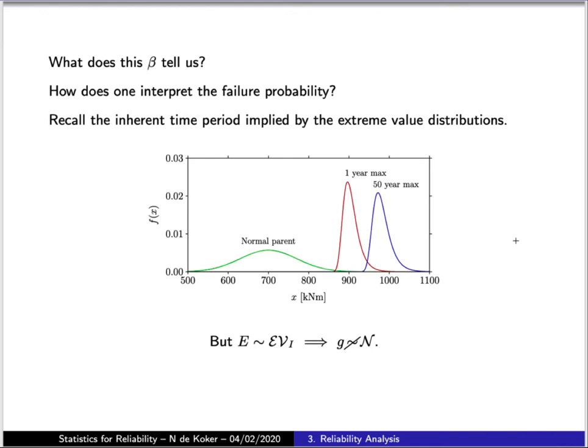Up to this point I've made no reference to time when referring to failure — I was simply assuming that a given instance of a load occurs and the probability of failure was in reference to that single instance of the load. In structural engineering we deal with structures that are around for many years and are subjected to environmental and imposed loads that vary with time. The way we get around this problem is by specifically considering the extreme values that our loads can take, and for that reason we end up using extreme value distributions like the Gumbel distribution.